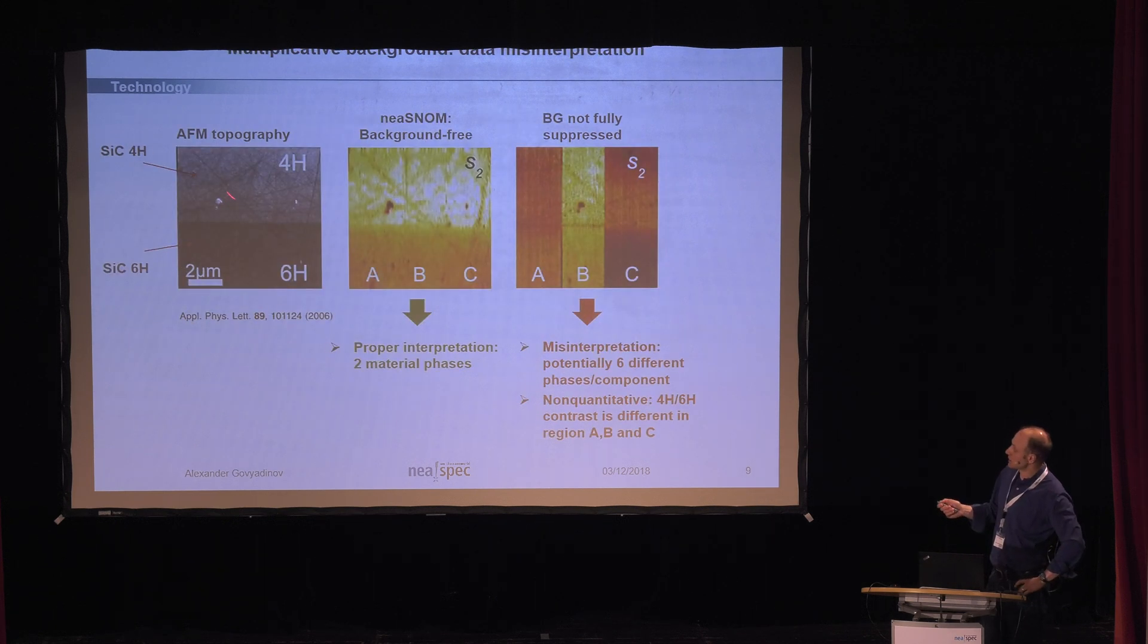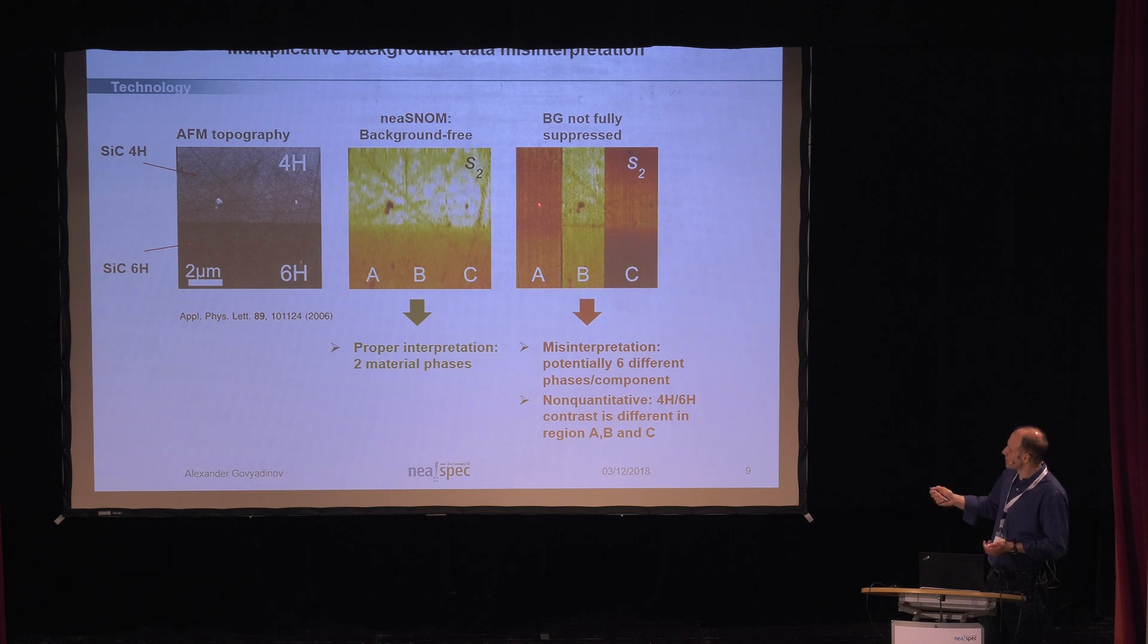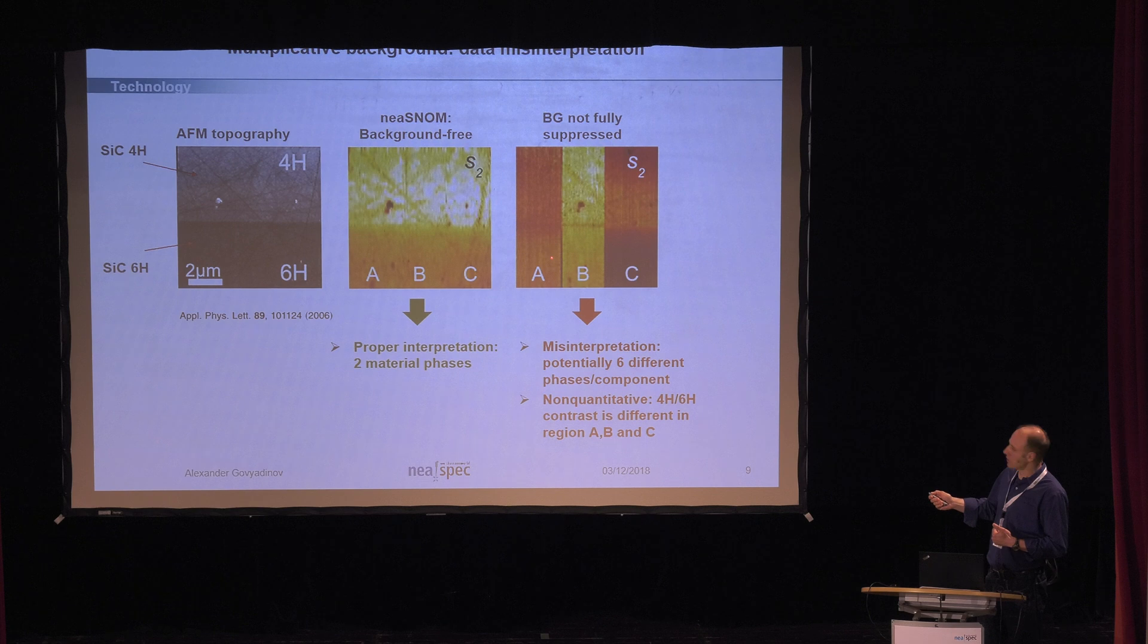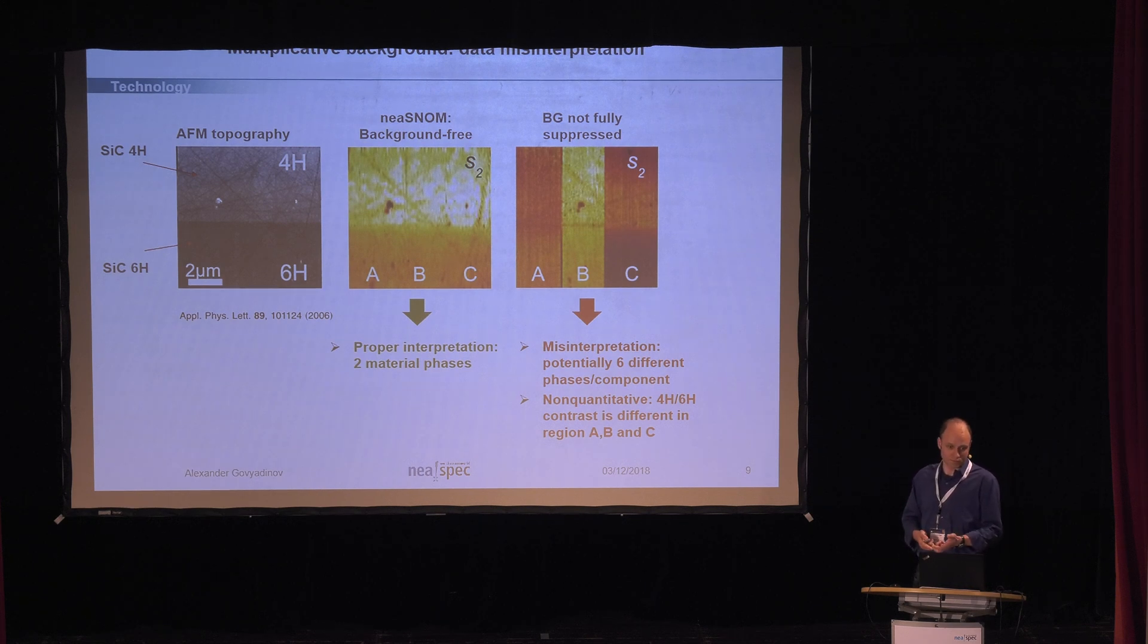Then the second example here. This is a sample which has two crystalline phases of the same material, silicon carbide. You see that there is only two parts. This is the proper image which you should see on this sample. You see the contrast, this one is brighter, this one is a little bit darker. But now, if you don't suppress the background or if you don't use the proper technology, then suddenly you might see something like this. How do you interpret this? Is it six different materials or different phases of the same material? Can you quantify the signal here and here? Because it changes, so the upper part here versus the bottom part here is not the same contrast as here, for instance, or there. So, in other words, suppression of the multiplicative background is very important. It can cause major artifacts in imaging. It can cause essentially misinterpretation or inability to quantify the signal, in other words.